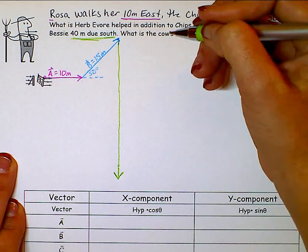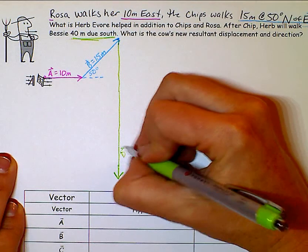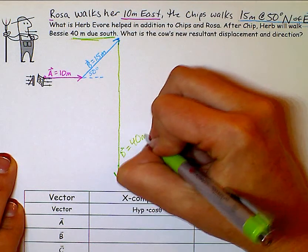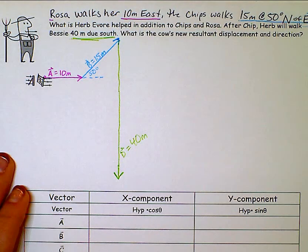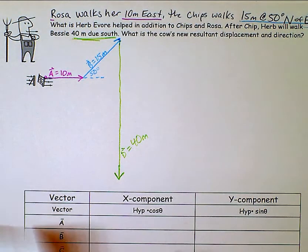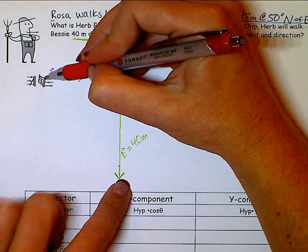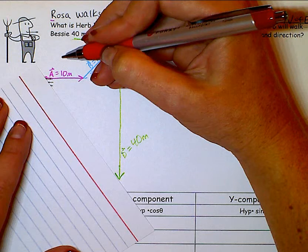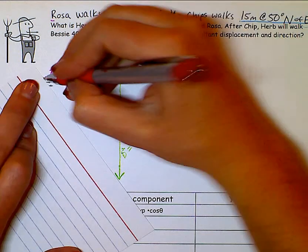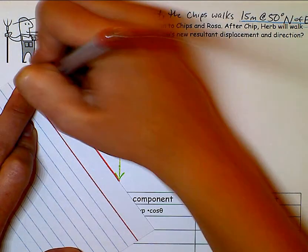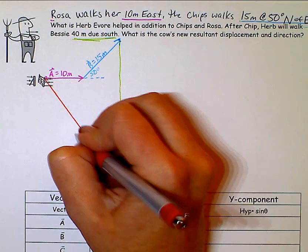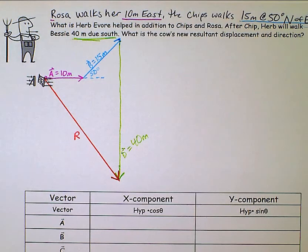Okay, and so C is 40. The resultant always goes from the very beginning to the very end. So the resultant is going to be from here to there. I've got to have arrows on absolutely everything. That's what I'm trying to find. How do I get there?